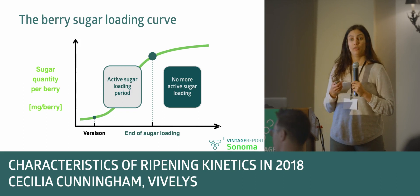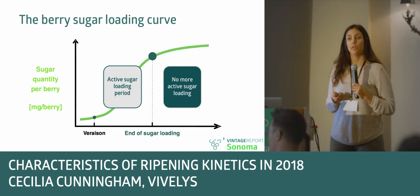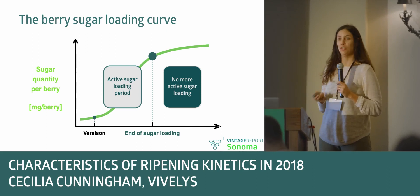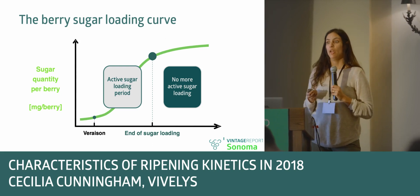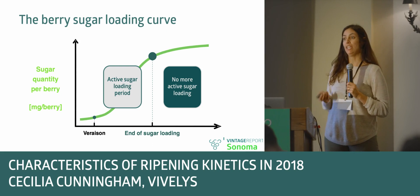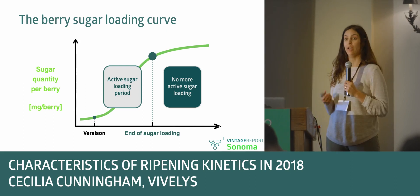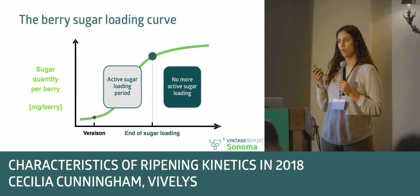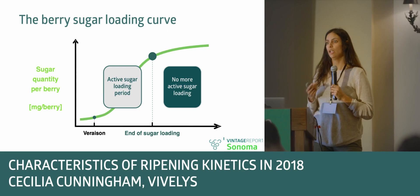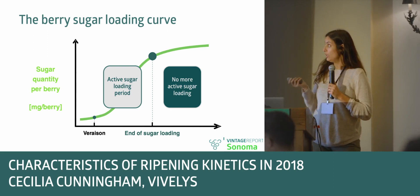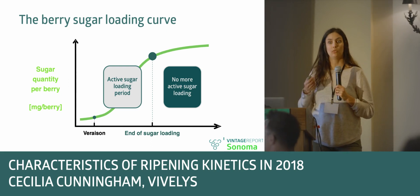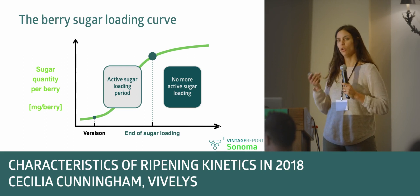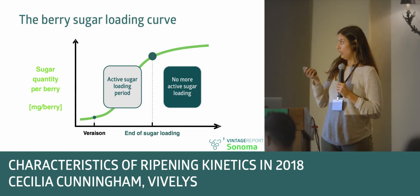We start measuring right after véraison. After this we have a period that we call the active sugar load period. It normally changes from year to year and area, but it's normally between 30 to 50 days. After almost two months of load, the plant really stops synthesizing sugar. Any variation that we see in the Brix is going to be due to a loss in volume and a concentration that will increase the Brix. This is how we really measure maturity, because the increase of the Brix at the end can be really affected by the conditions of the season. The end of sugar load is actually when the plant starts ripening — when we see all the other physiological parameters, the synthesis of precursors, all the other polyphenols developing.